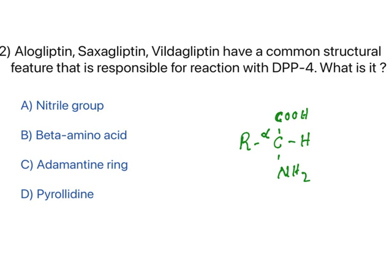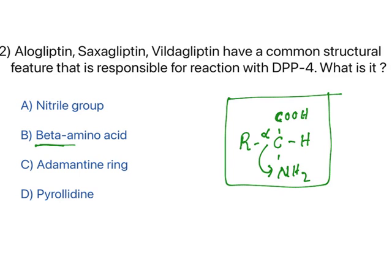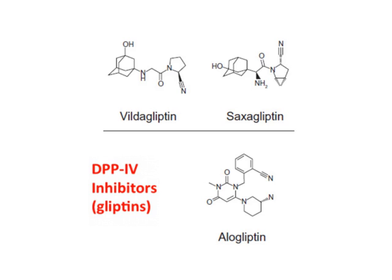Common amino acids have the structure R-CH(NH2)-COOH, with the amine attached to the alpha carbon. A beta amino acid has one extra carbon, with the amine attached to the beta carbon. Looking at the structures of vildagliptin, saxagliptin, and alogliptin, you need to identify which feature is common to all three.